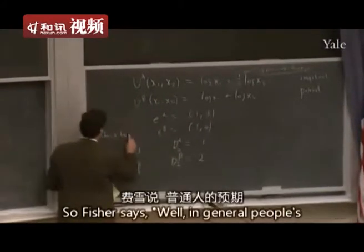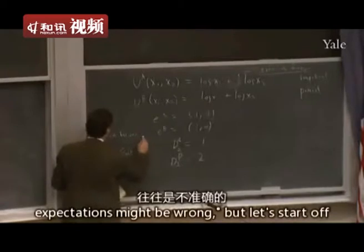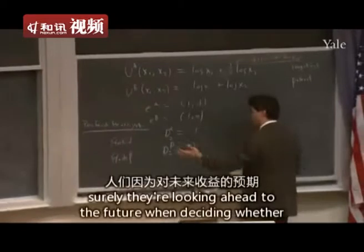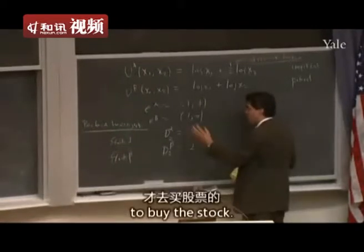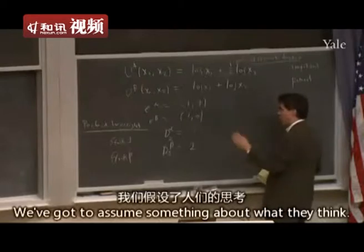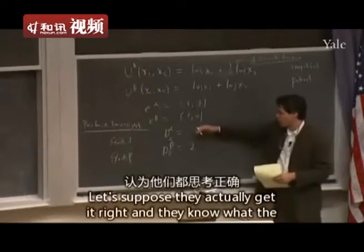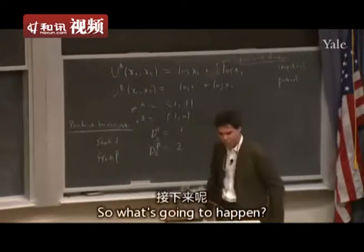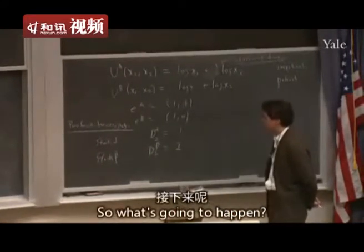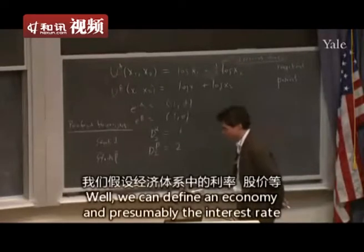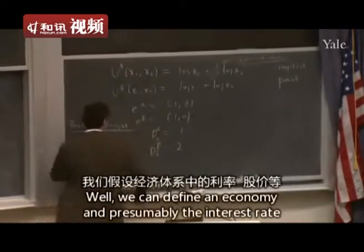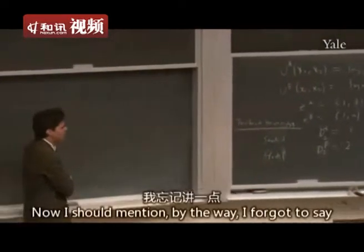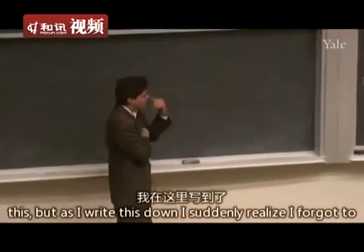D_alpha_2 is what people expect the output of stock alpha to be next year, and D_beta_2, which is 2, is what people expect stock beta to produce next year. We'll assume perfect foresight here. Fisher says in general people's expectations might be wrong, but let's start with the case where people anticipate something correctly — they're looking ahead to the future when deciding whether to buy the stock, and let's suppose they actually get it right and know what the stock produces next period.